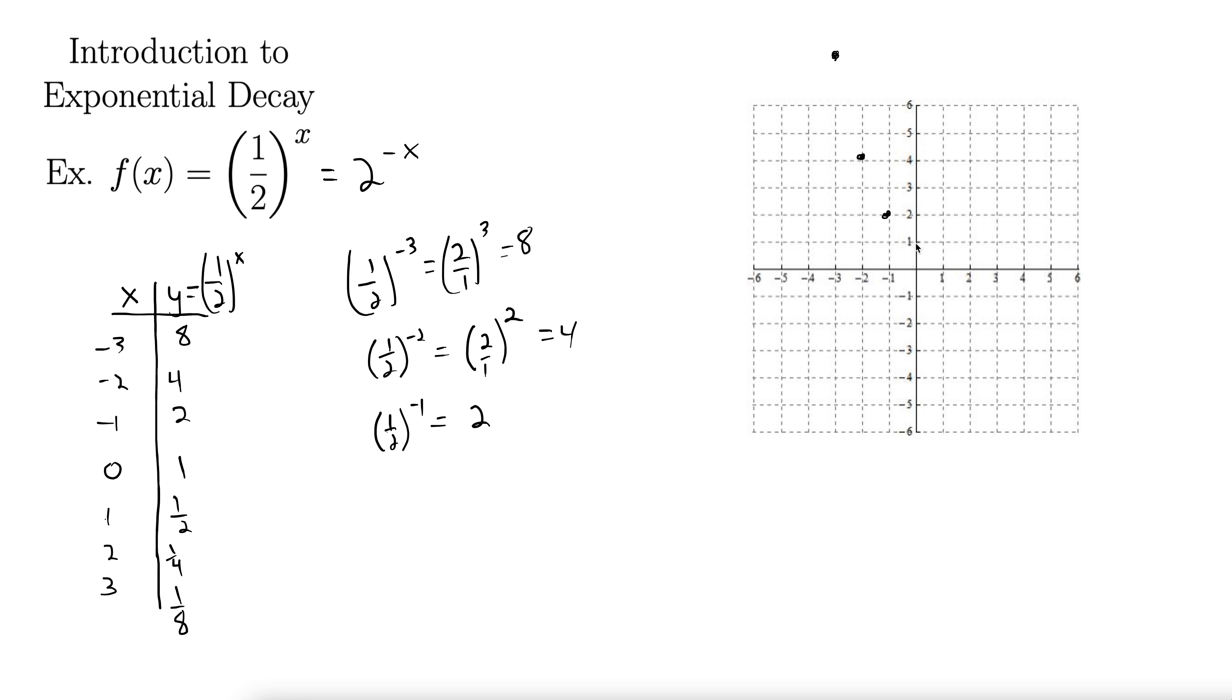At 0, we're at 1, so that's going to be one of our main anchor points, 0, 1, just like with exponential growth. At 1, we're at 1 half. At 2, we're at 1 fourth. And at 3, we're at 1 eighth, so we're way down here. And you can get an idea of what's happening here.